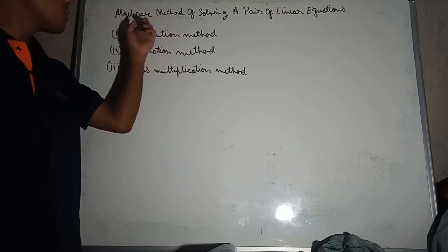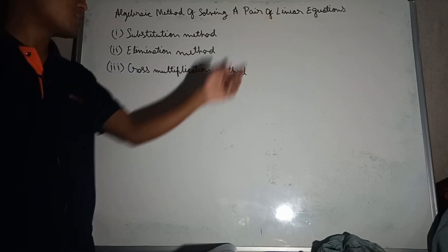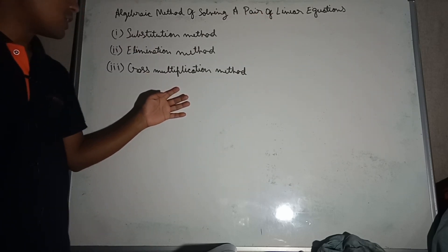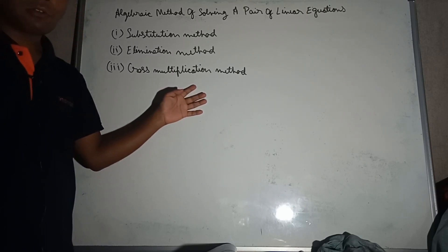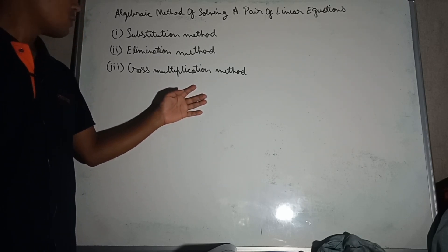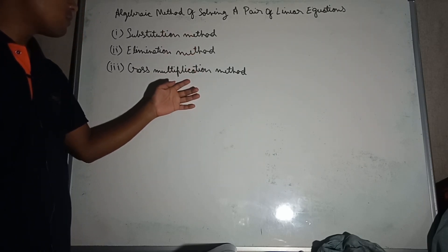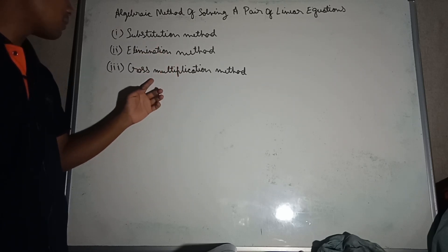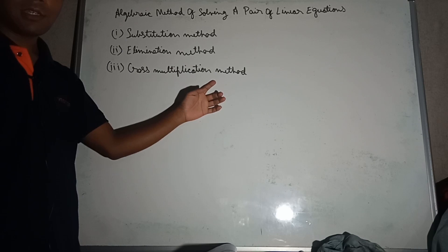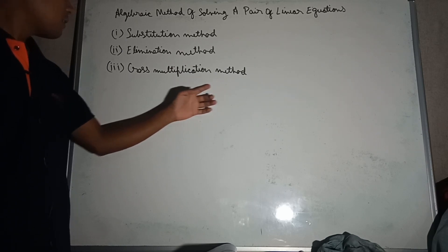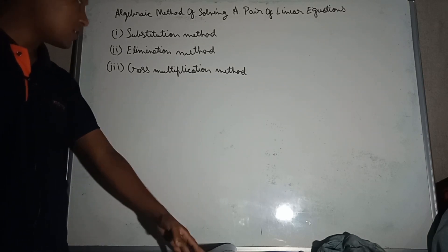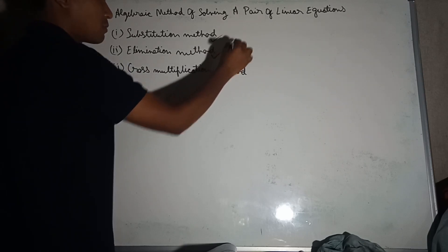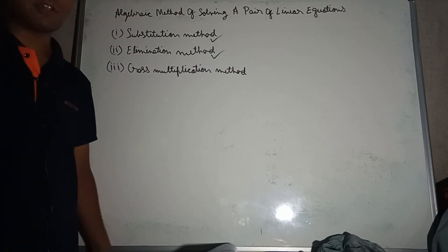The algebraic method of solving a pair of linear equations includes the substitution method, the elimination method, and the cross multiplication method. Exercise 3C covers the substitution method and the elimination method.